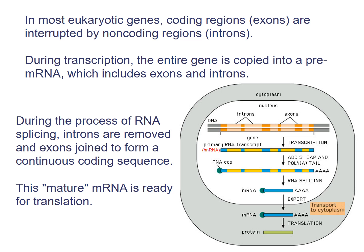In most eukaryotic genes, the DNA contains introns and exons. The exons are the regions or sequences that code for a protein — shown here as blue lines. The yellow ones are introns. Only the blue lines, the exons, are present for making proteins, and all the yellow lines — the introns — have been removed.